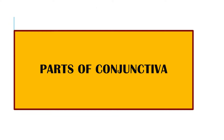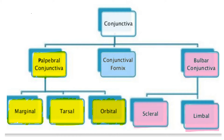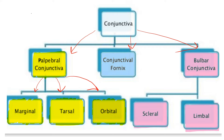Now let us talk about the parts of conjunctiva in detail. The conjunctiva has three main parts: the palpebral conjunctiva, the fornicial conjunctiva, and the bulbar conjunctiva. The palpebral conjunctiva is further divided into marginal conjunctiva, tarsal conjunctiva, and orbital conjunctiva. The conjunctival fornix is not further subdivided. The bulbar conjunctiva is divided into scleral conjunctiva and limbal conjunctiva.